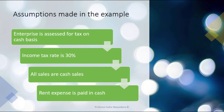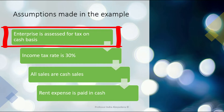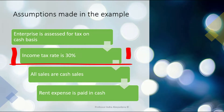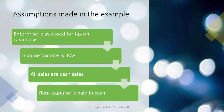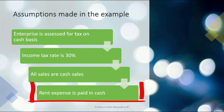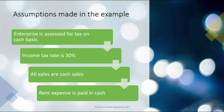Before we proceed, for this enterprise, we assume the enterprise is assessed for tax on a cash basis. The income tax rate is 30%. All sales are cash sales, and the rent expense recorded by accounting records is paid in cash.